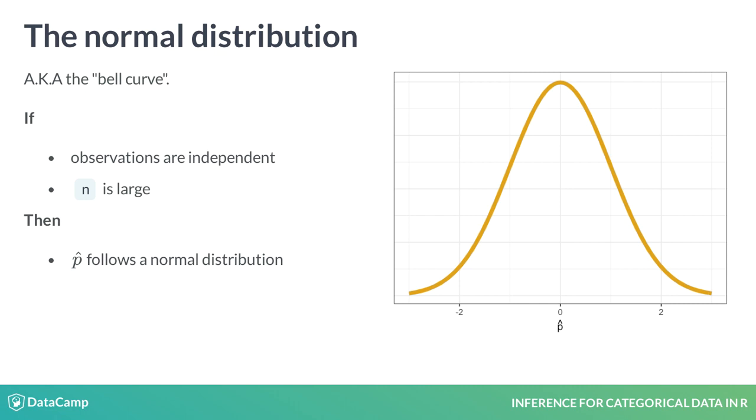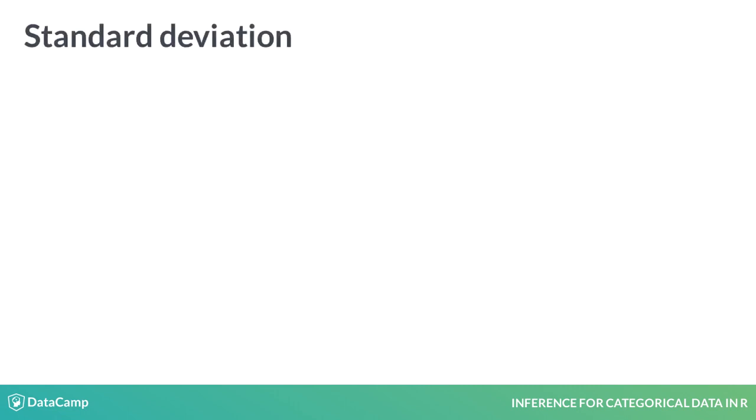This distribution is called the sampling distribution of p-hat, and it's very similar to the bootstrap distribution in that it captures the variability of our estimate across many possible datasets. This standard deviation formula can be used to estimate the standard error for use in a confidence interval.